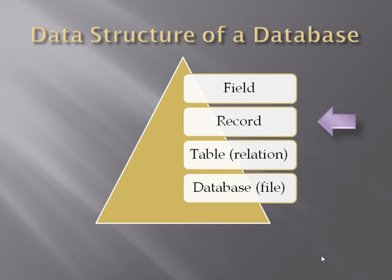The next item of information stored in a database is a record. A record is a collection of fields — a complete description of a single object we're interested in. In this case it would be a student, so a record would contain a single student's first name, their address, their student ID number, and their email address.